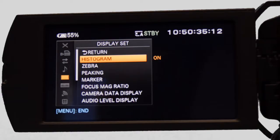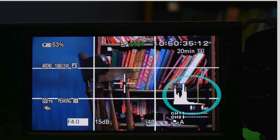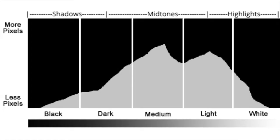Histogram and zebra stripes assist you in adjusting your exposure. The histogram is a graphic representation of the grayscale in your image. Pure black is on the left and pure white is on the right. The vertical axis shows the intensity of each grayscale value. Shadows, mid-tones, and highlights are represented left to right.